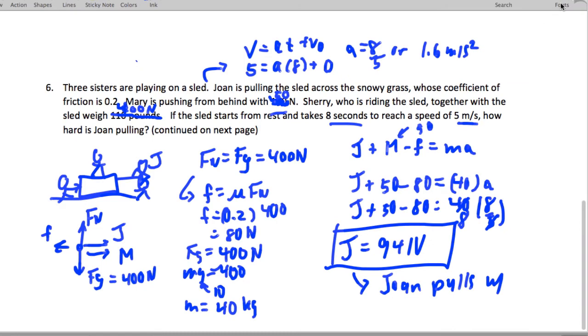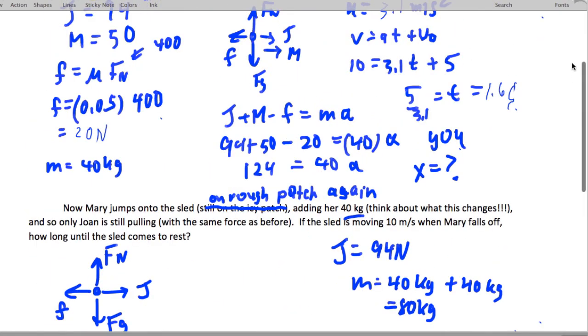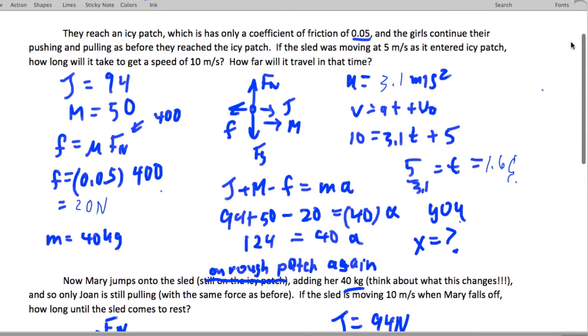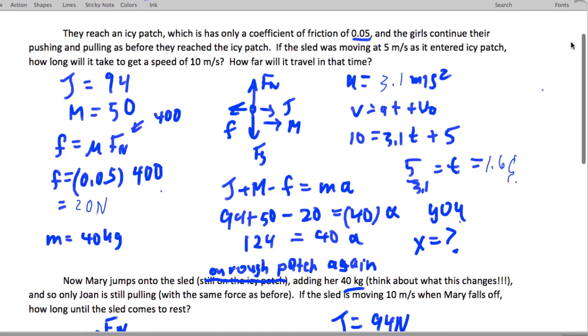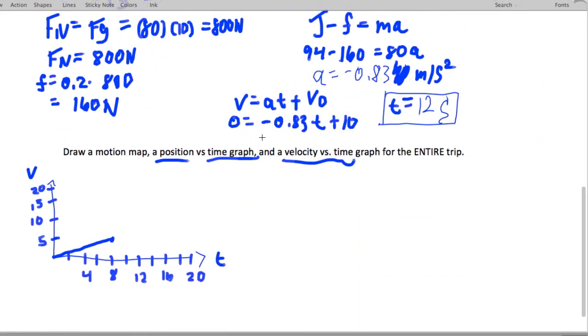So now we're going to go from 0 to 5 meters per second in 8 seconds. So in 8 seconds, we go all the way up to here at a uniform rate. Then what happens? Next, in about 1.6 seconds, it seems that we go to 10 meters per second. So that's quite a drastic shift. So then here, we're going to end up going pretty quick like that.